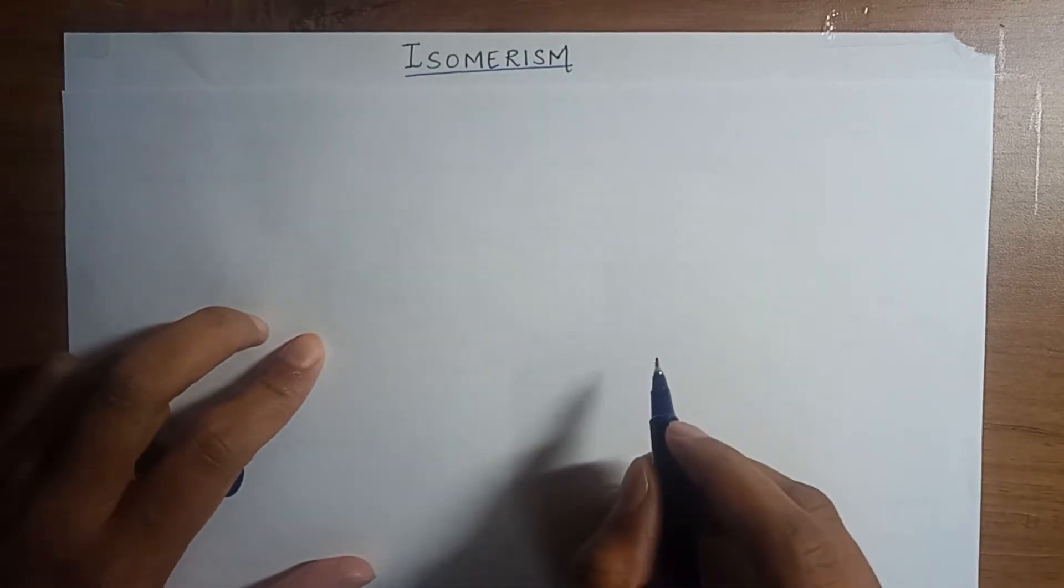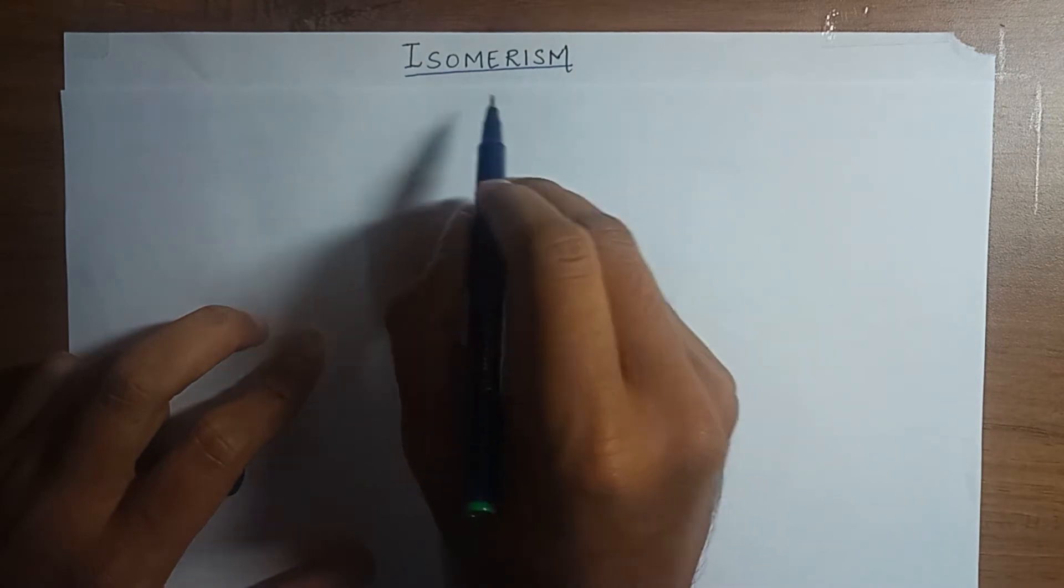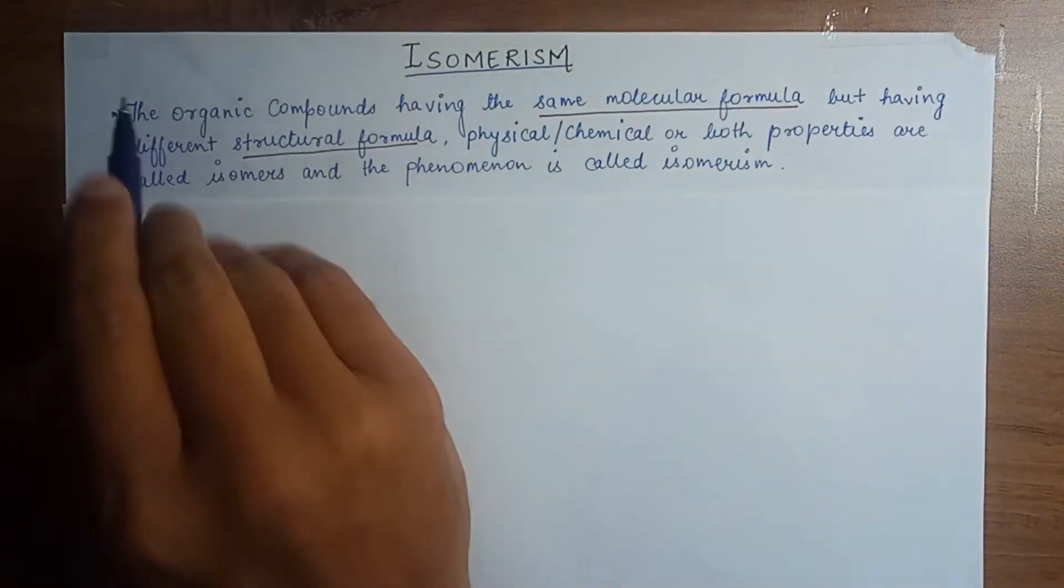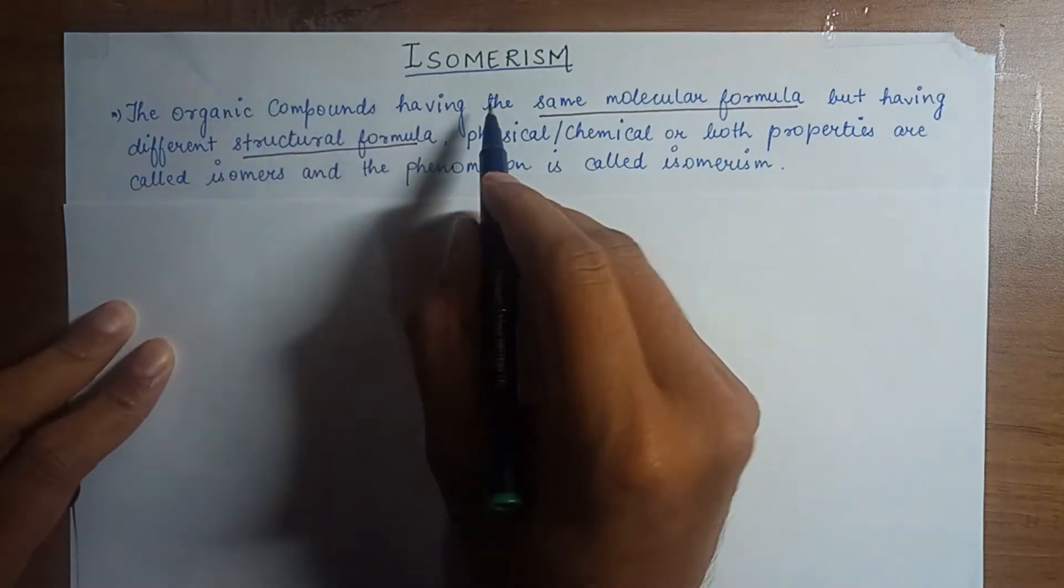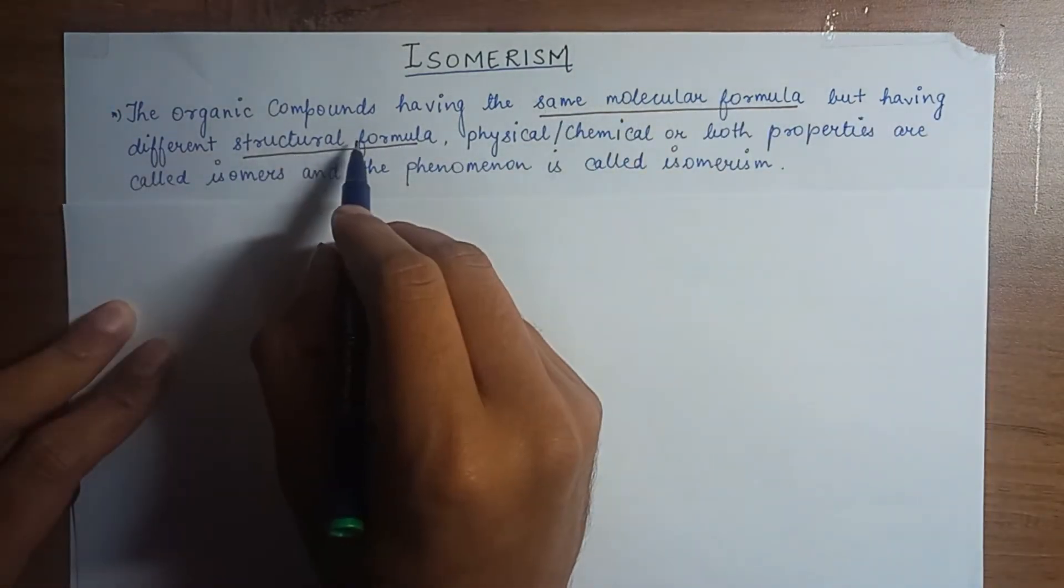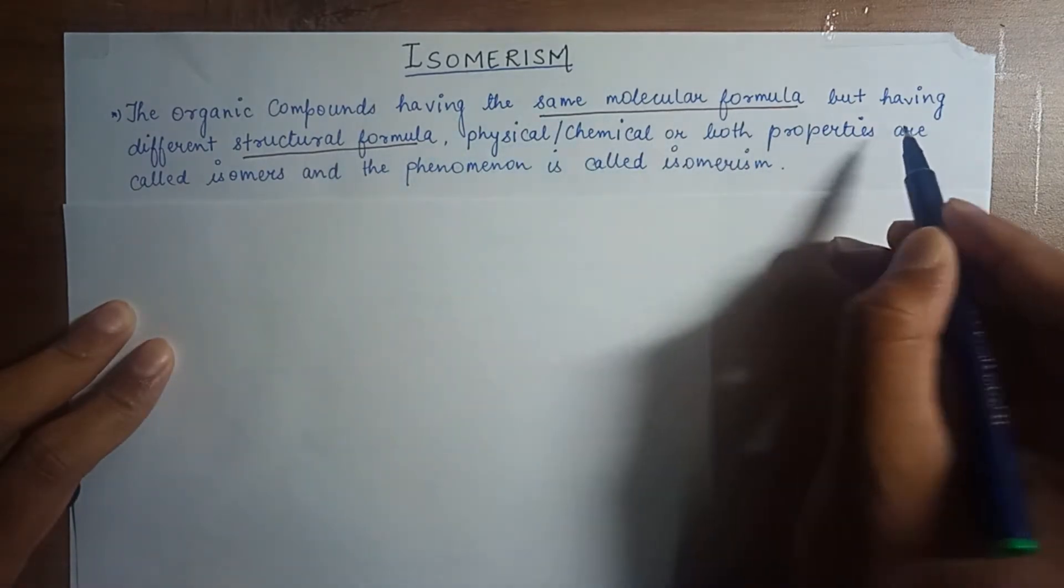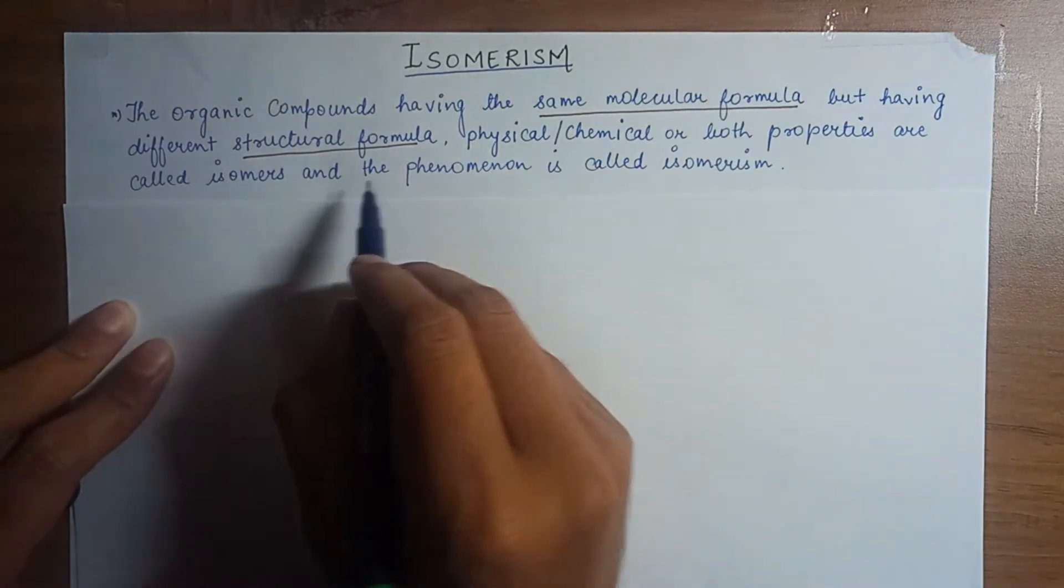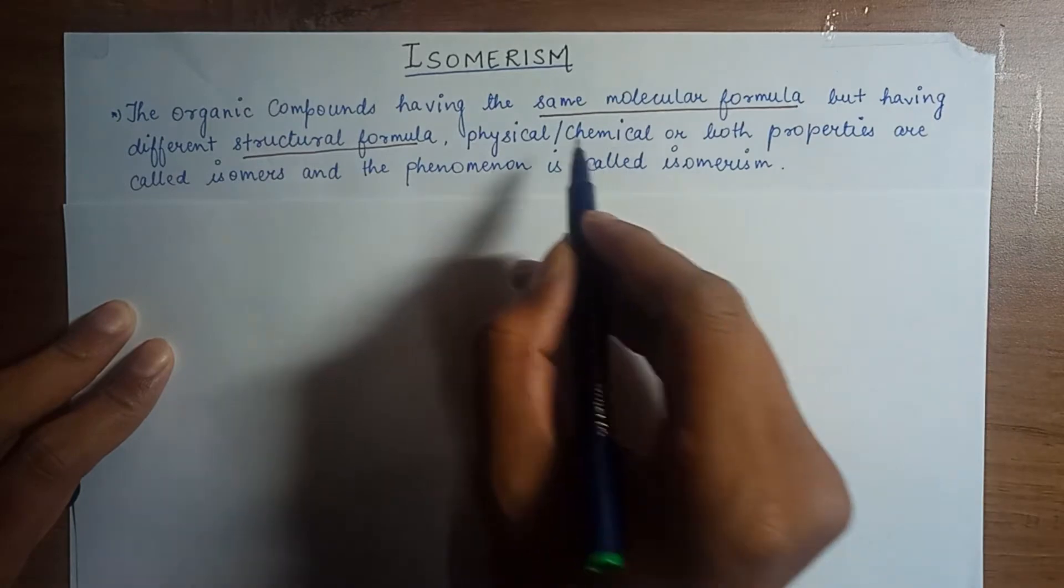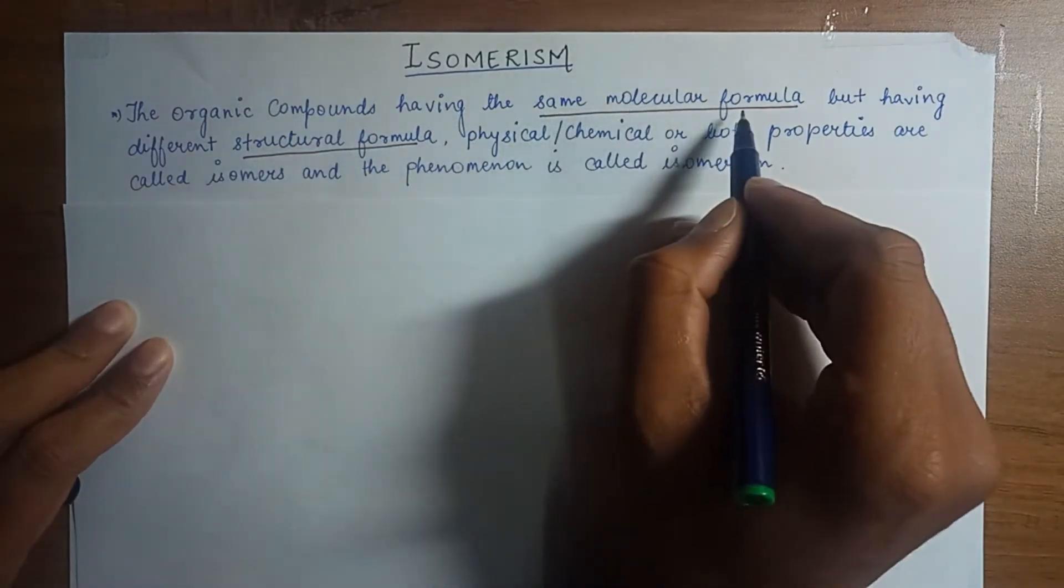Hello friends, in this video we will understand the concept of isomerism. Let us see how isomerism is defined. The organic compounds having the same molecular formula but having different structural formula or physical or chemical or both properties are called isomers and the phenomena is called isomerism. So what is important in isomers is they have the same molecular formula.